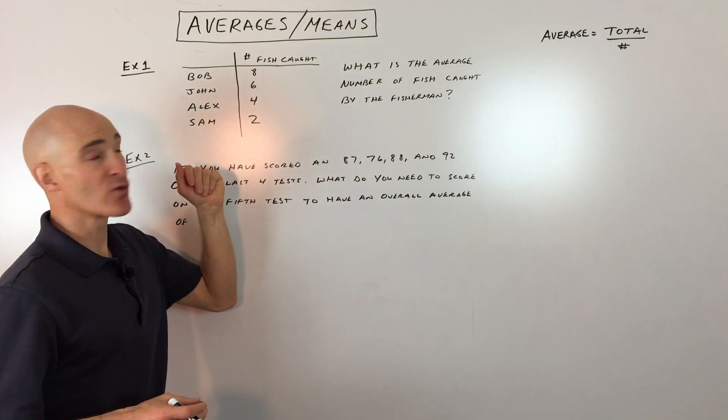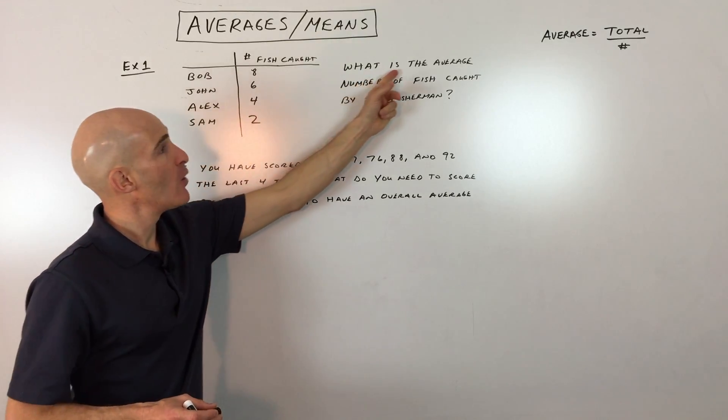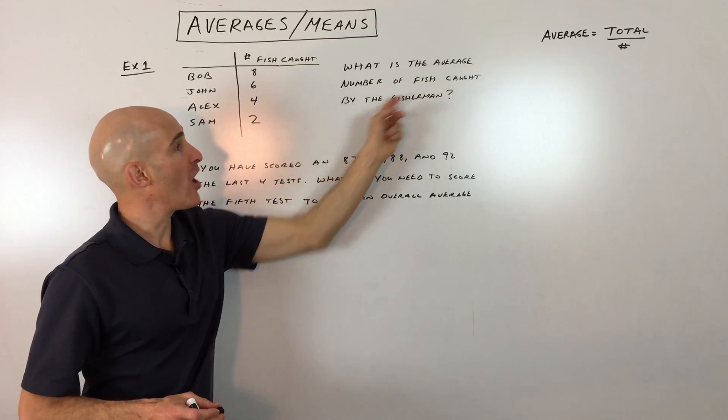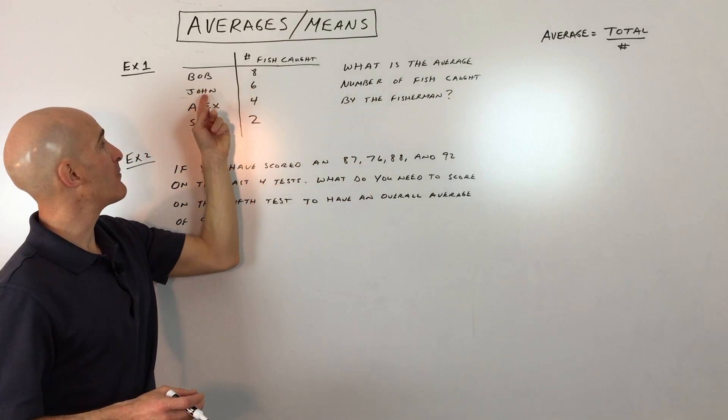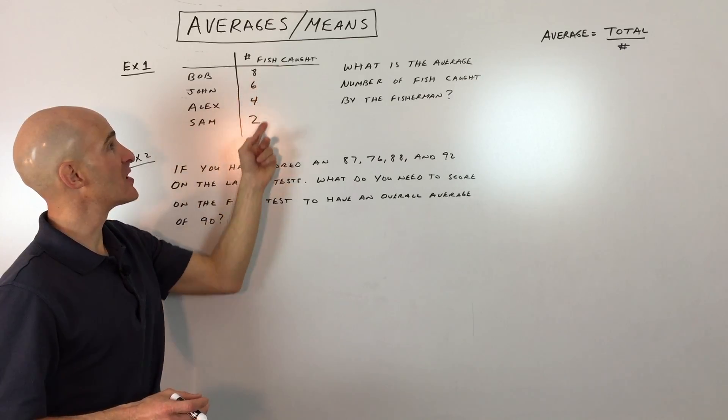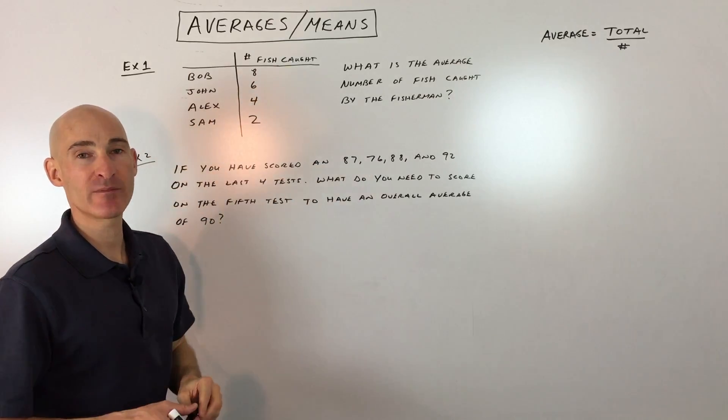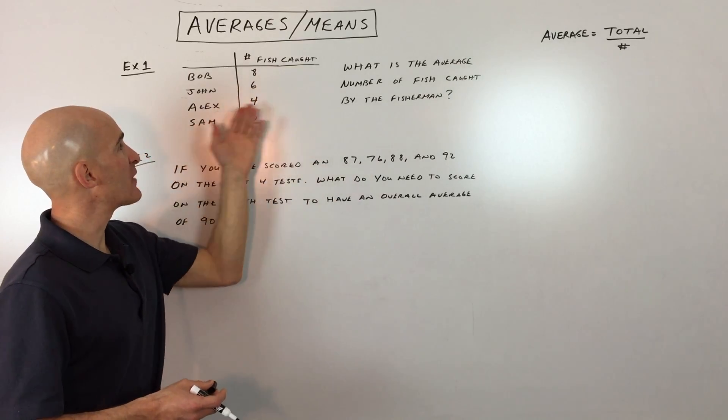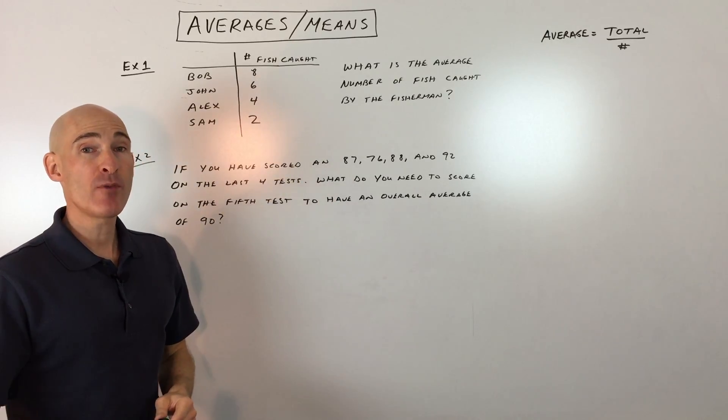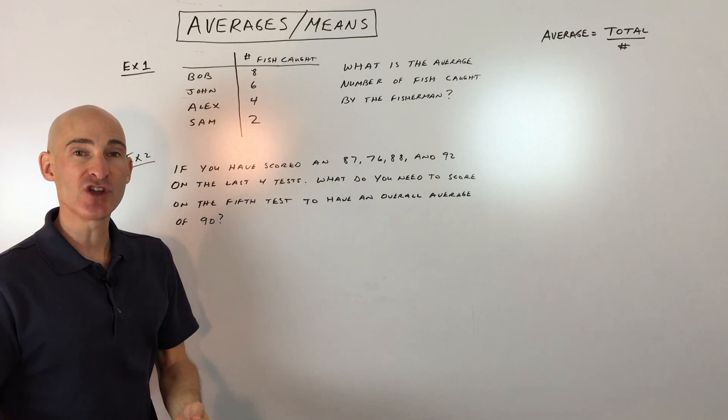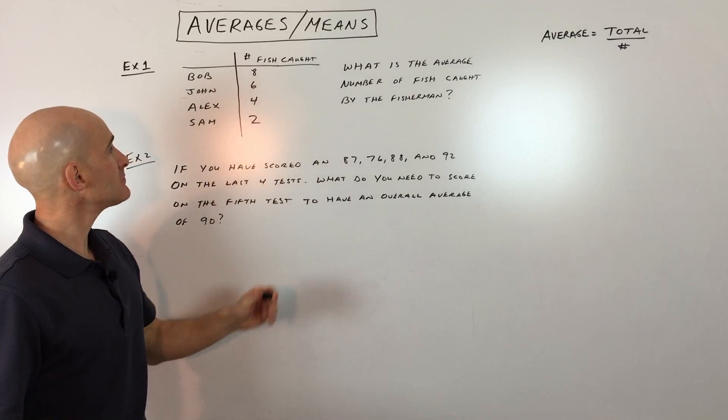So the first example is a little bit more straightforward. It just says, what is the average number of fish caught by the fishermen? There's a table over here. It's got Bob, John, Alex, and Sam. It shows you the number of fish that they caught. Maybe it's like a fishing competition, something like that. We're just trying to figure out what the average is. So go ahead and pause the video and see if you can solve it and then we'll go through it together.